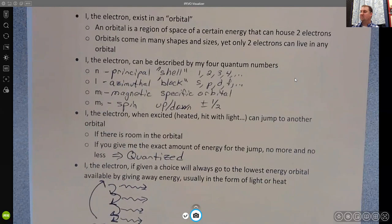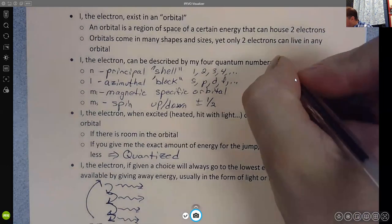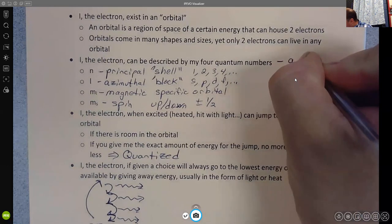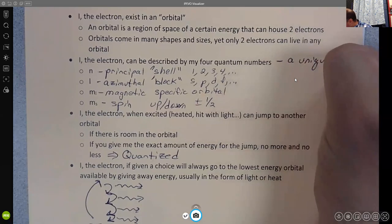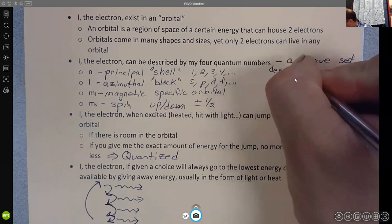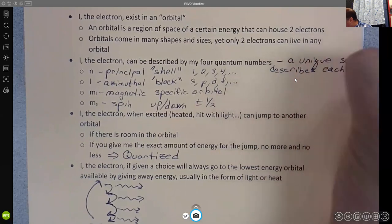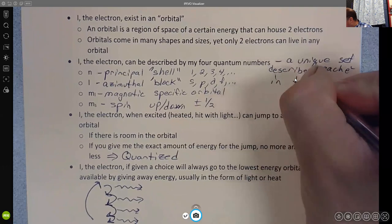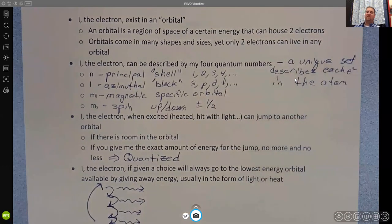One of the nice things, though, about these particular quantum numbers, the way that we use them is that a unique set describes each electron in the atom. And so, in any given atom, it has to have a unique set of four quantum numbers.